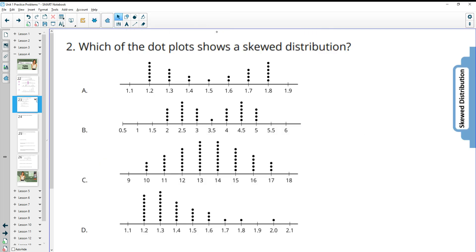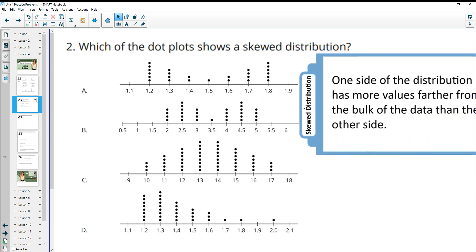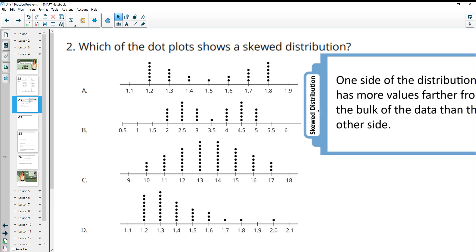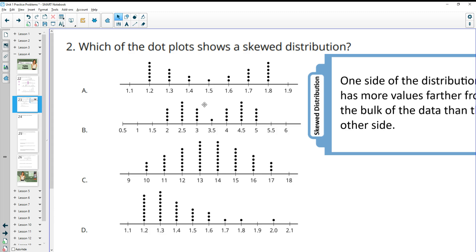Number two, which dot plot shows a skewed distribution? So let's take a look at what a skewed distribution means from your lesson summary. A skewed distribution is one side of the distribution has more values further from where the bulk of the data is at than the other side. So we want to look at where do we see the bulk of the data and is there something that's further away from the bulk?